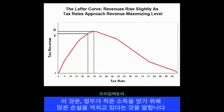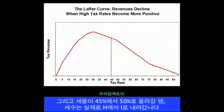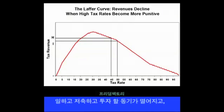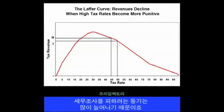This means the government is imposing a lot of damage to get very little additional revenue. And when the tax rate jumps from 45% to 50%, revenues actually decline from point H to point I. This is because the incentive to work, save, and invest falls a lot, and the incentive to evade and avoid the tax man rises a lot.